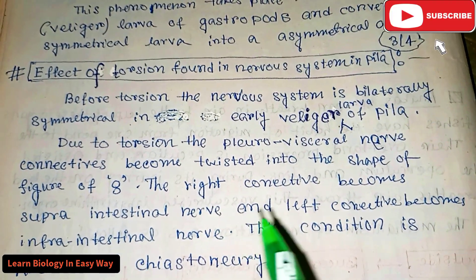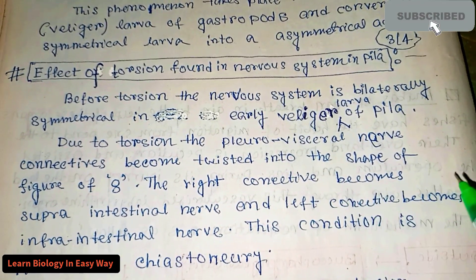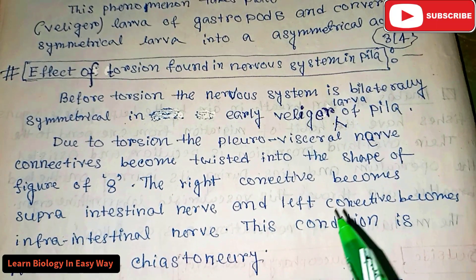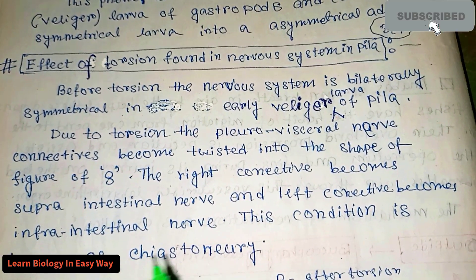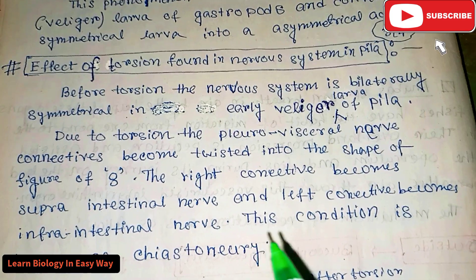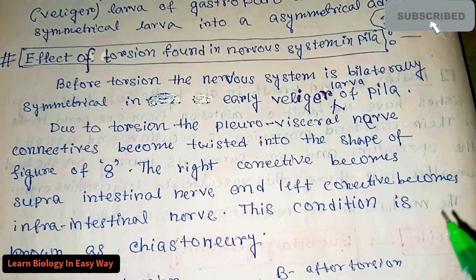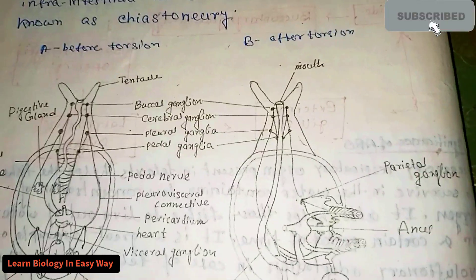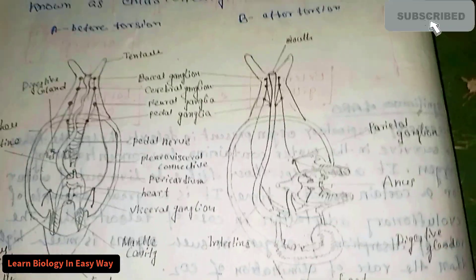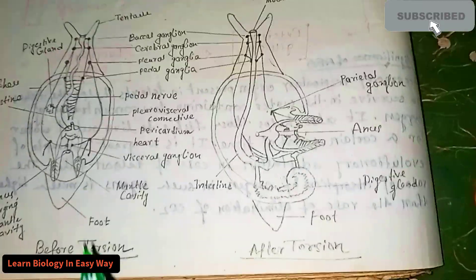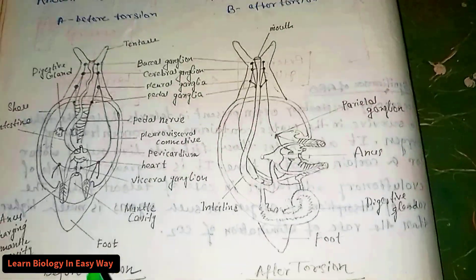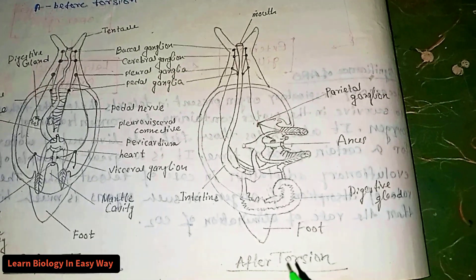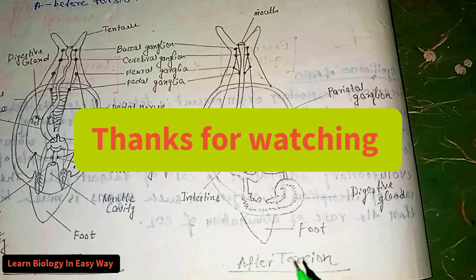The right connective becomes the supra-intestinal nerve and the left connective becomes the infra-intestinal nerve. This condition is known as chiastoneury. This is the diagram before torsion and this is the diagram after torsion.